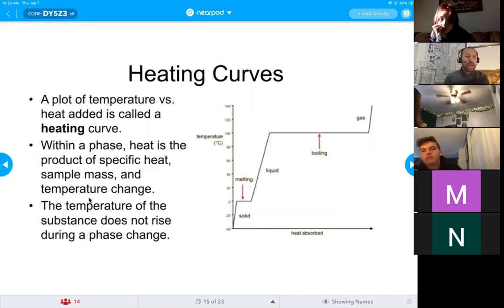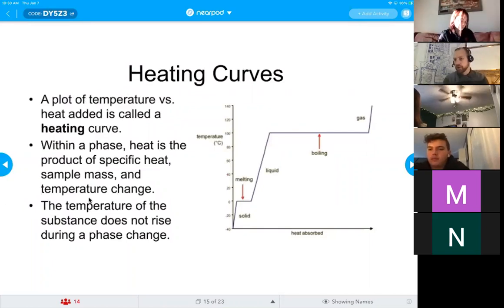We can represent phase changes versus energy using something that is called a heating curve. On this heating curve, we can see the three states of matter and the two transitional periods, melting and boiling, in this case, because we're adding heat.